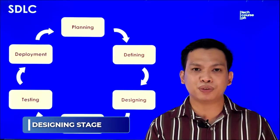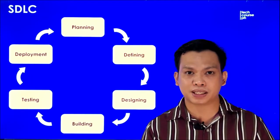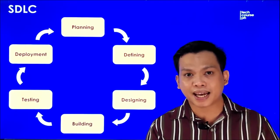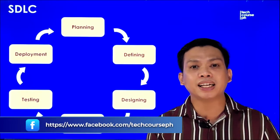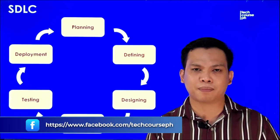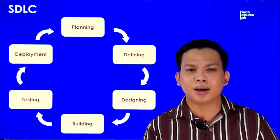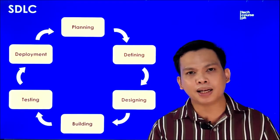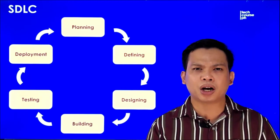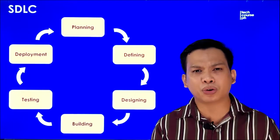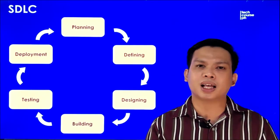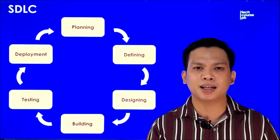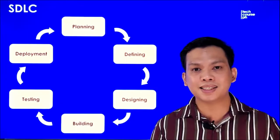The next stage naman is the designing stage. Since nalaman na natin sa previous stage yung SRS or yung Software Requirement Specification, ito yung gagamitin para mabuo yung next document na tinatawag na DDS or Document Design Specification. Ang DDS ang maglalaman ng architectural modules na bubuo sa ating system as well as yung mga data representation para clearly malaman natin kung ano ba yung mga modules na bubuo sa system natin. Ito ay a-approbahan ng mga stakeholders para ma-assess yung mga risk, kung gaano karobust ang system, magkano yung budget, at kung gaano katagal bubuin ang system na ito.